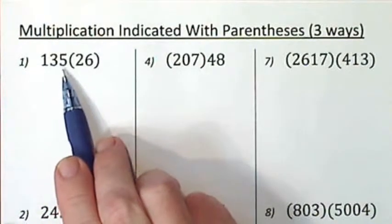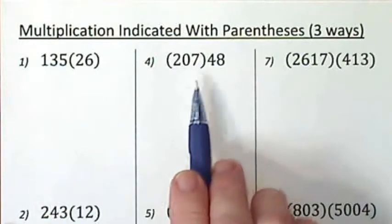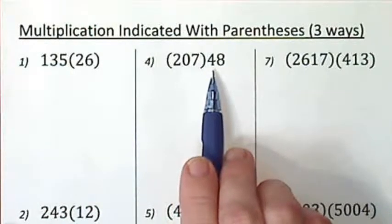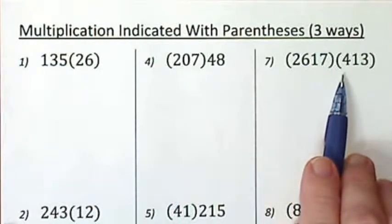Multiplication is called for if you have a number next to parentheses, parentheses next to a number, or parentheses next to parentheses.